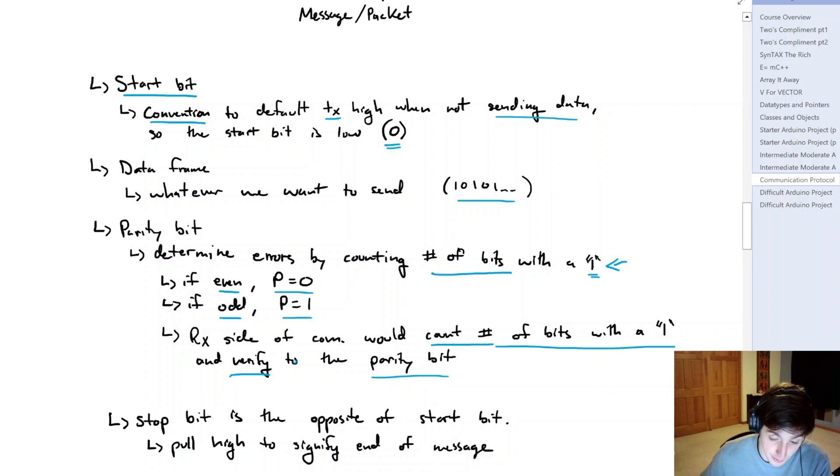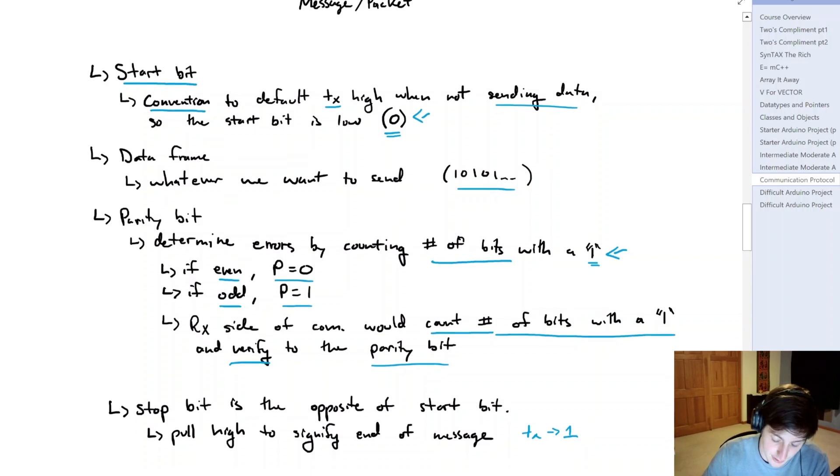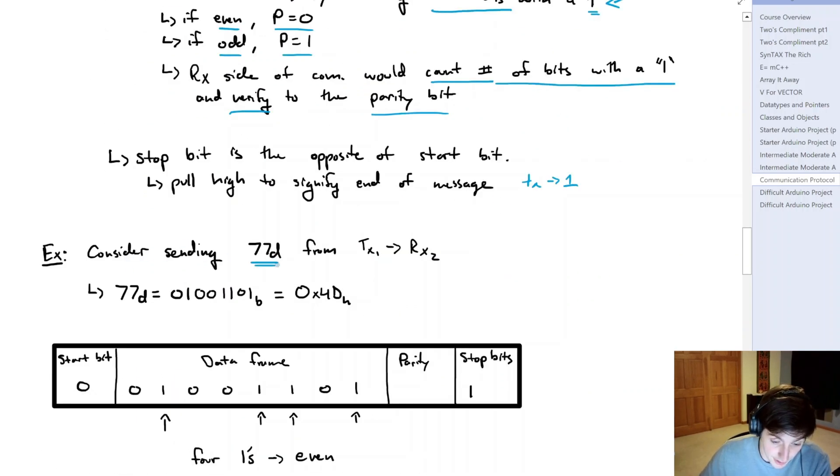And then lastly, the stop bit. So with the start bit, we pulled TX low or zero. To signify that the message is done, we simply pull it high. We can look at an example. Let's consider sending the value 77 in decimal from UART1 to UART2. So we can't just send 77 in the data frame. We need to know the binary representation of that. So we know our start bit is going to be a zero. We have our data frame with 77 converted into binary. We have our parity bit. And if we look at the parity bit, we have four one values in the data frame. So this would represent an even amount of ones, and that parity bit goes to zero.